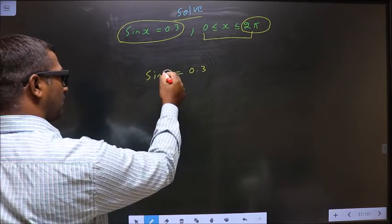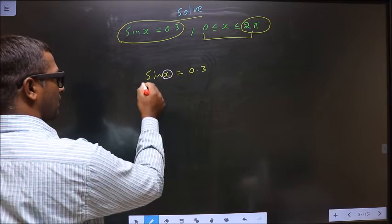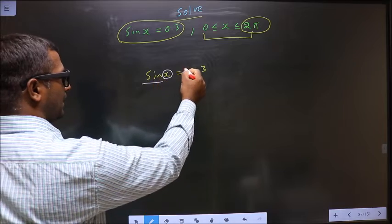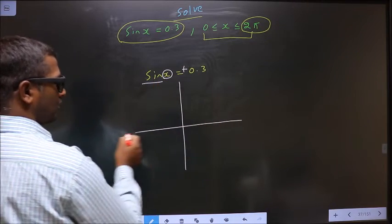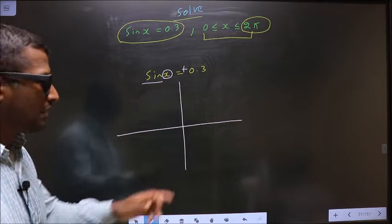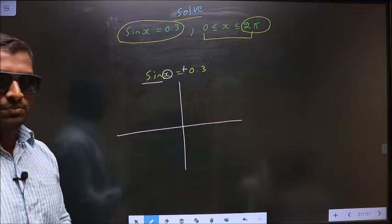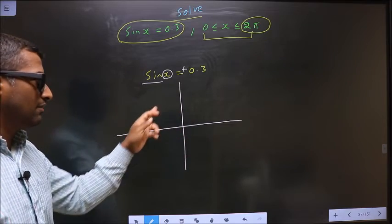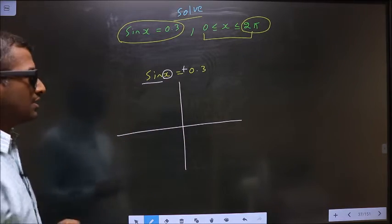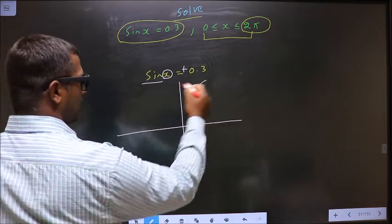Now to get the values for x, here I have sin and it is positive. You should check in which quadrants sin is positive. It's 'all silver tea cups' - sin is positive in the first and second quadrants.